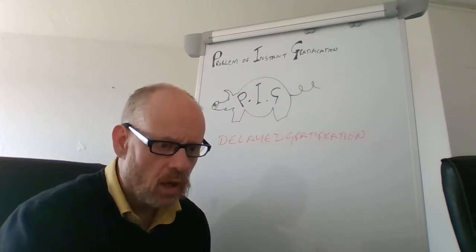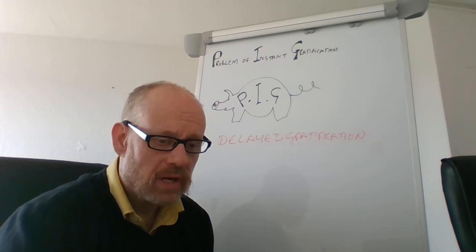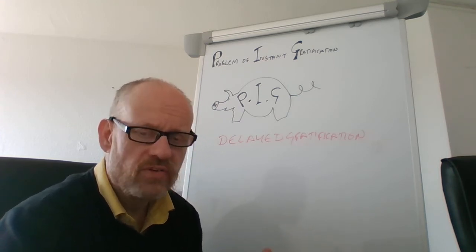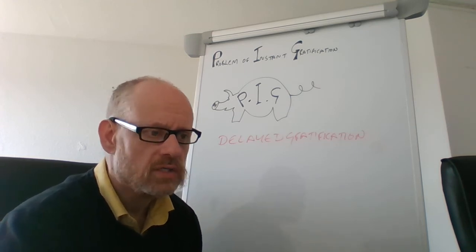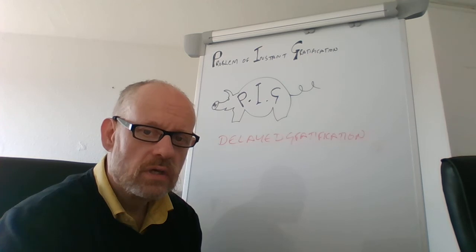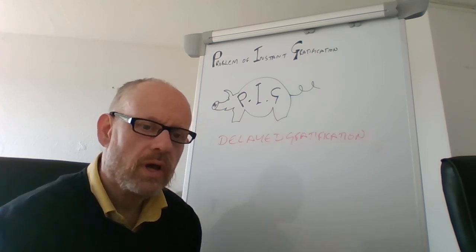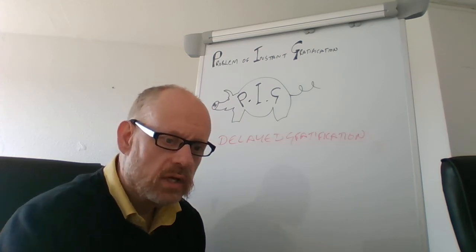A way of thinking about it is that pleasure, we go out pleasure seeking, pleasure only lasts, is fleeting, just like instant gratification. Pleasure is instant gratification. But happiness, happiness is something that lasts, can last a long time, and that comes with delayed gratification.